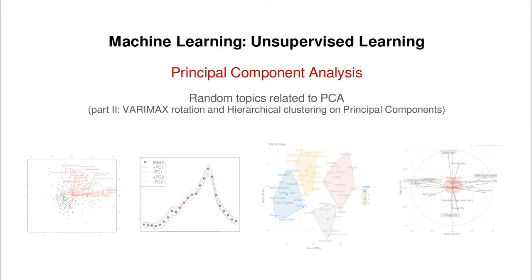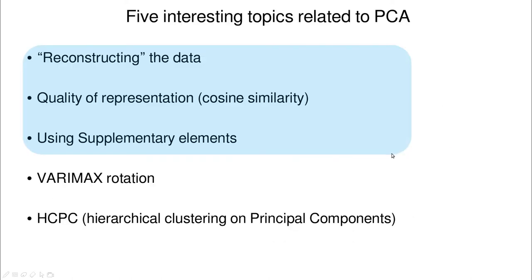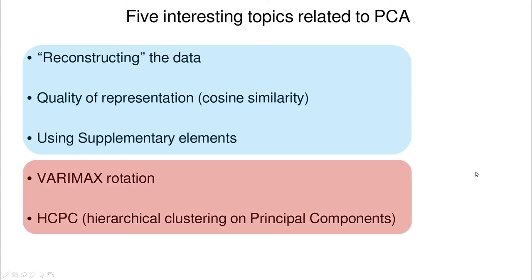Hi everyone. This is part two in a collection of ideas that I think are not very standard, but I think they are worth knowing. In this case, I'm going to talk about varimax rotation and hierarchical clustering on principal components. You can go back to the first part of the video to learn more about reconstructed data, quality representation, and how to use supplementary elements and why that is useful.